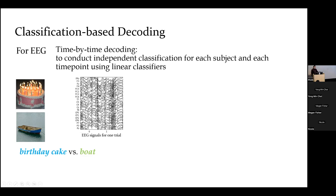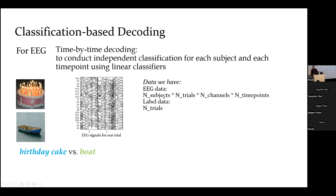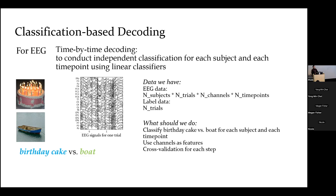For each trial, we have the EEG signal as a matrix with the shape of number of channels by number of time points. So the data we have is EEG data with shape: number of subjects by number of trials by number of channels by number of time points. We also have the labels — for each trial, a label for birthday cake or boat, where zero is birthday cake and one is boat. What we do is classify birthday cake versus boat for each subject and each time point, using channels as features. We also need to do cross-validation to avoid overfitting.